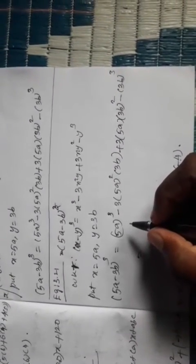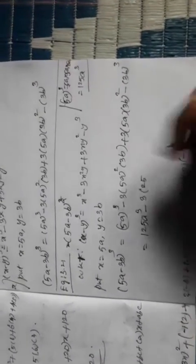(5a)³ means 5a × 5a × 5a. 5 × 5 = 25, then 25 × 5 = 125, so (5a)³ = 125a³. For the second term, 3 × (5a)² × 3b: (5a)² = 25a², so we have 3 × 25a² × 3b = 225a²b.